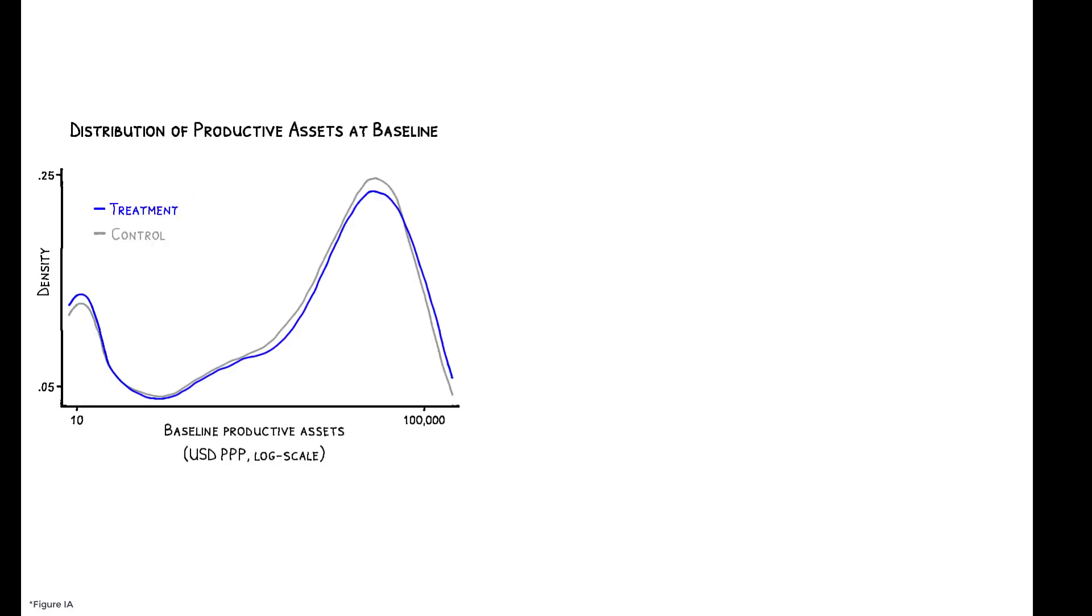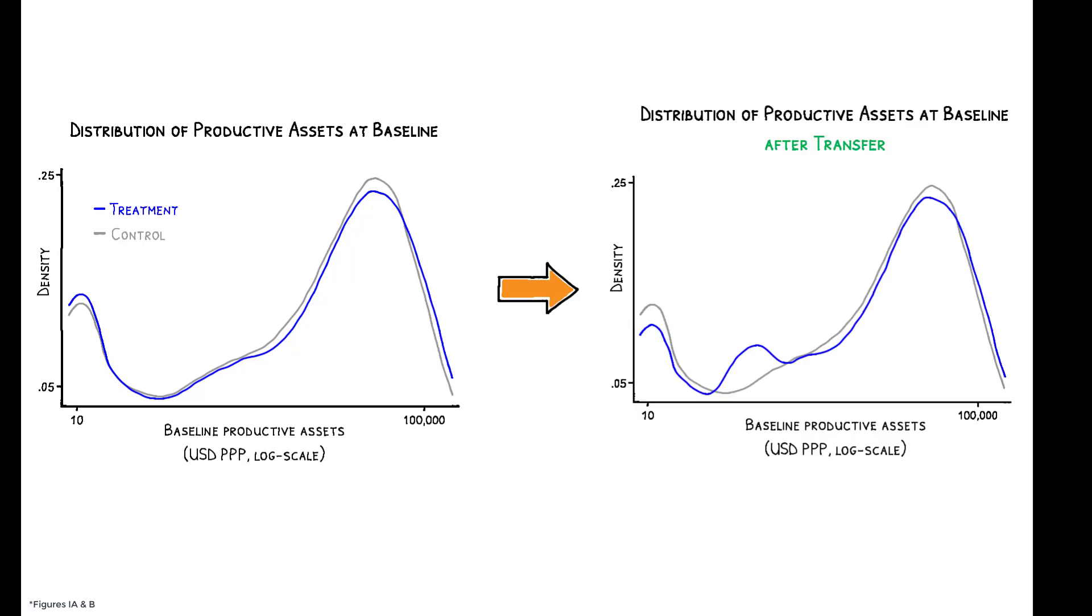This bifurcation suggests that the BRAC transfers, which are large enough to move poor households in treatment villages to a different part of the asset distribution, may allow the poor to grow out of poverty by giving them access to the more productive occupations of their wealthier neighbors.